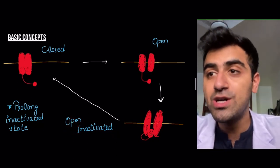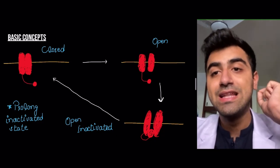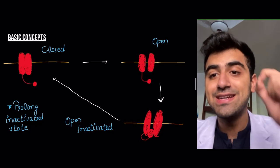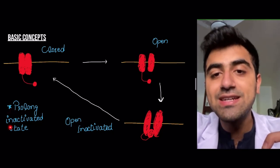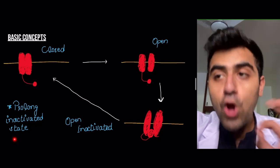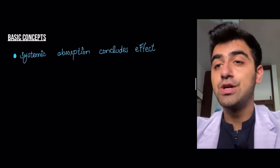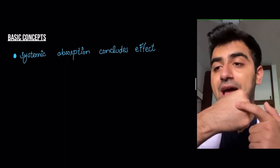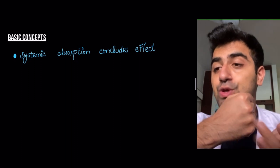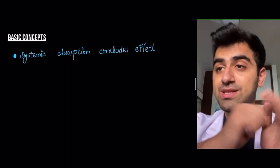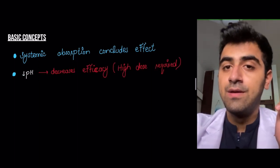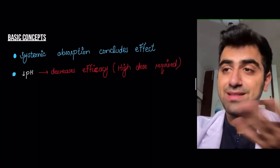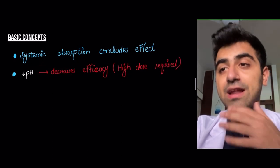To repeat the key buzzwords: local anesthetics bind in the open inactivated state, prolonging the inactivated state of the channel, blocking the sensation of pain. Now, some basic concepts — systemic absorption concludes the effect of these drugs. If you want to anesthetize your hand and the anesthetic is absorbed into the systemic circulation, that will end the effect, and the feeling of pain and other sensations will return.